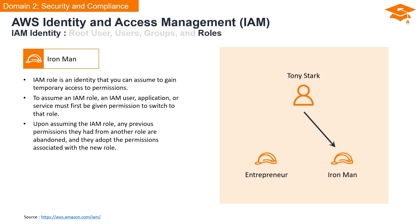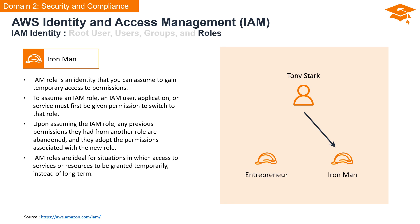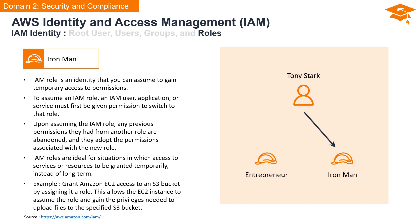Once an IAM user, application, or service assumes an IAM role, any prior permissions they held from another role are temporarily abandoned. They relinquish their initial permissions and adopt the permissions associated with the new role. IAM roles are best suited for granting temporary access to services or resources, as opposed to long-term permissions. For instance, assign a role to grant Amazon EC2 access to an S3 bucket, enabling the EC2 instance to assume the role and acquire privileges for uploading files to that S3 bucket.